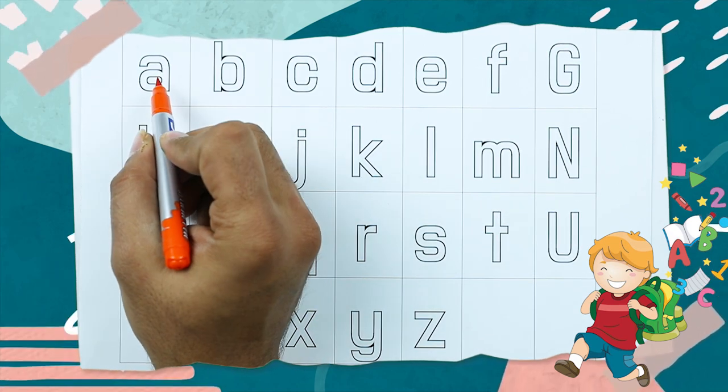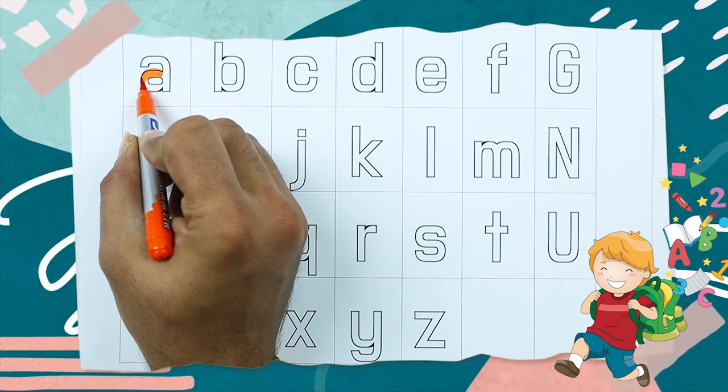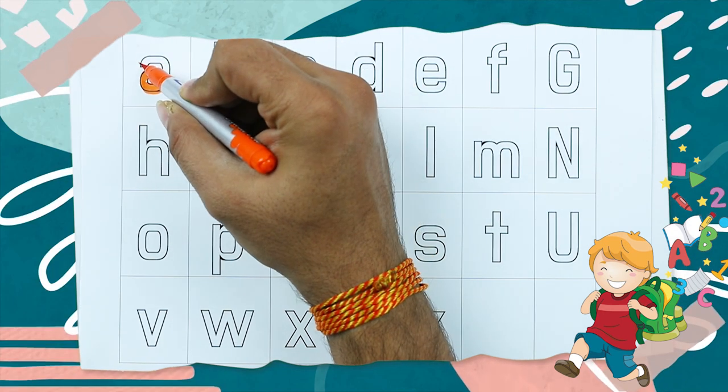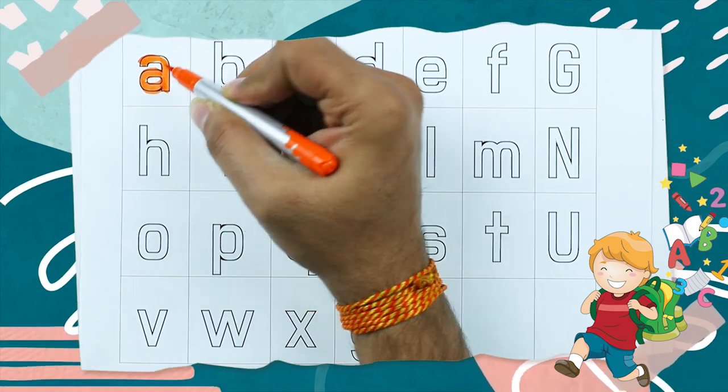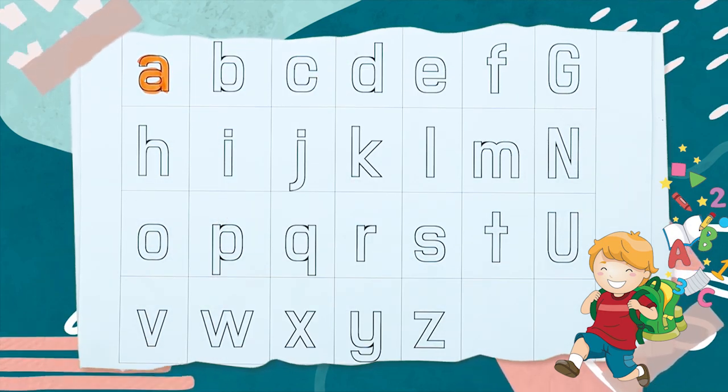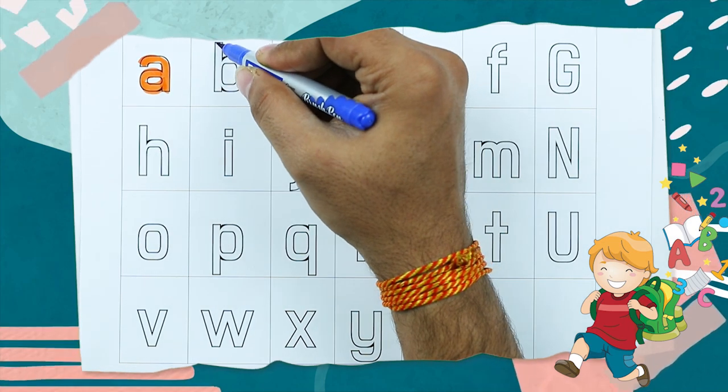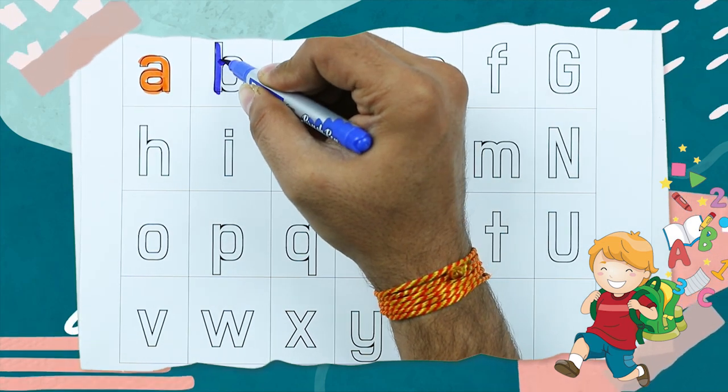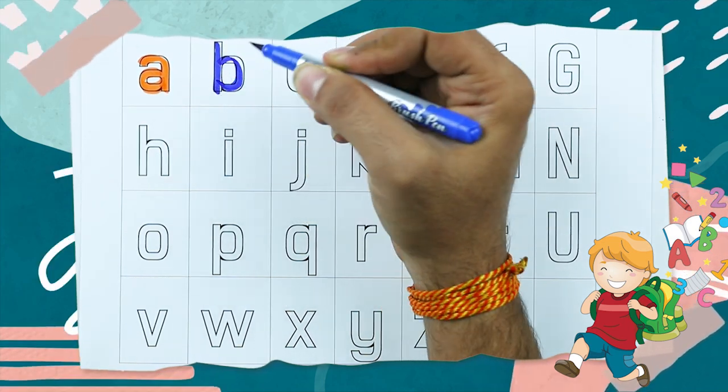Make small A. A for apple, it's A. B, B for ball, small b.